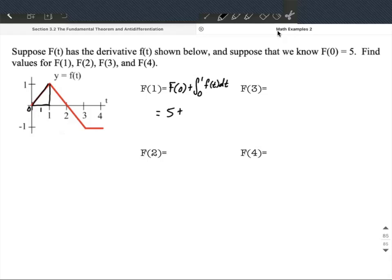So that's 1/2 base times height, giving an area of 1/2. Therefore, 5 + 0.5 = 5.5. That's the final value for F(1).